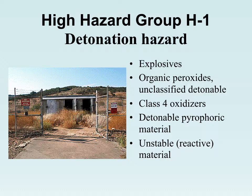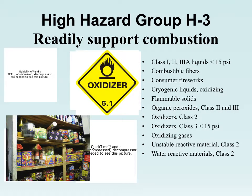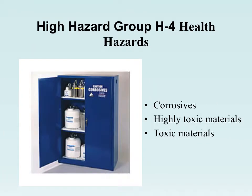H-2 covers flammable and combustible materials. H-3 includes products that readily support combustion, like oxidizers, which add to a fire and make it worse. H-4 is for health hazards — things that are corrosive, highly toxic, or dangerous if inhaled or contacted, such as acids, corrosives, pesticides, and herbicides. Acids are stored in blue wood cabinets rather than metal, because the acid would eat through metal.